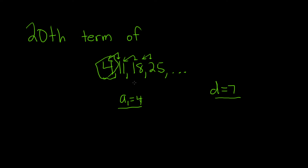Here's the reasoning. If you're at the first term, to get to the second term, you add d one time. If you're at the first term and you want to get to the third term, you have to add d once, twice.